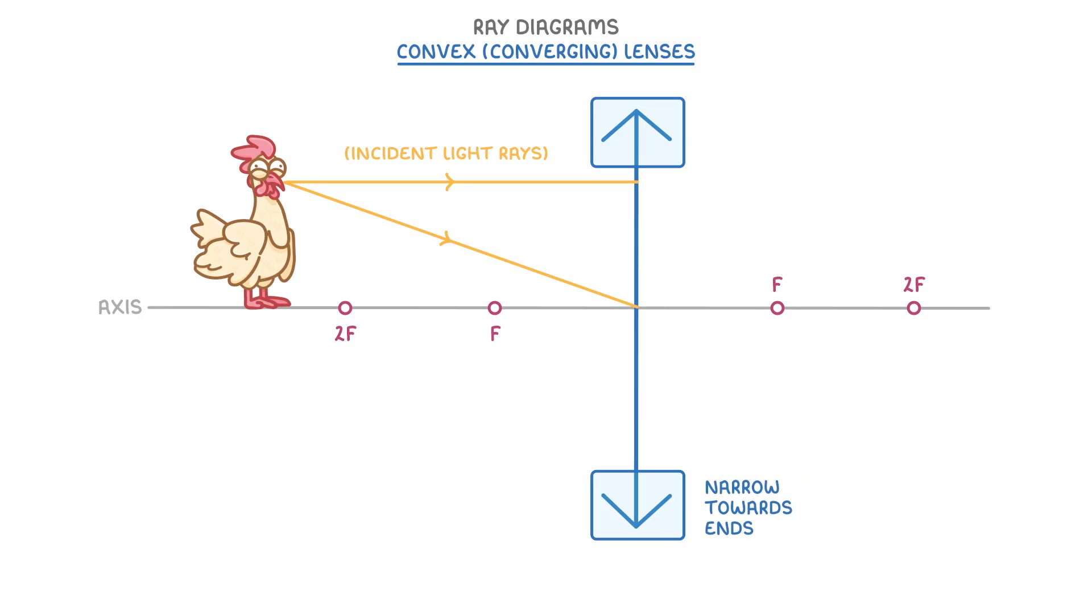The ray passing through the middle of the lens won't be refracted at all, and will just continue straight on. The parallel ray, though, will be refracted so that it passes through the focal point on the other side of the lens, and then carries on going.